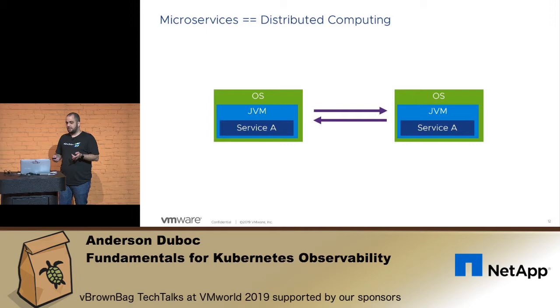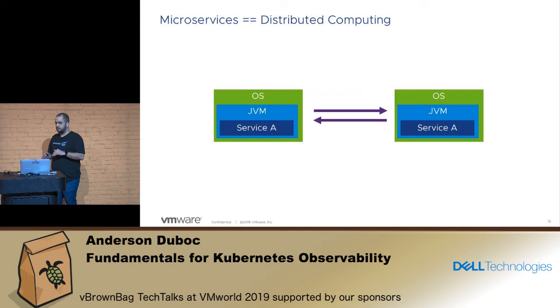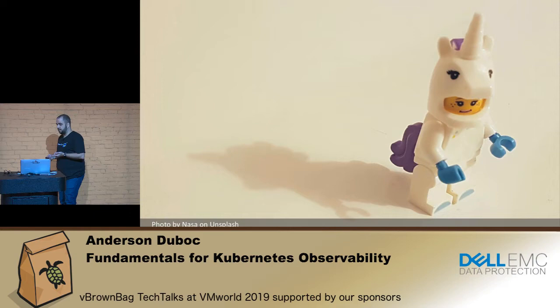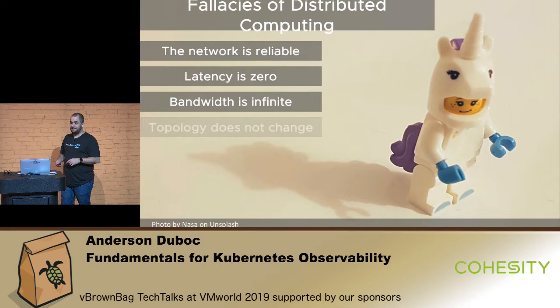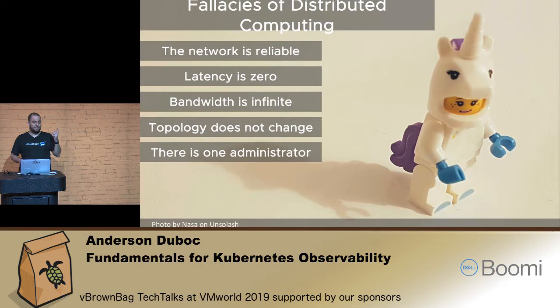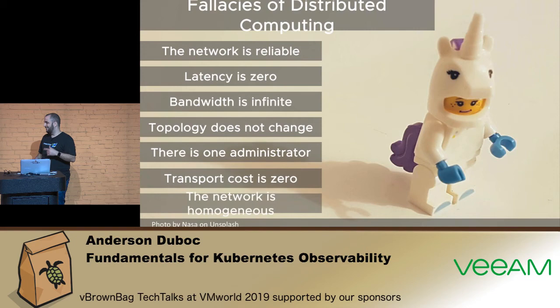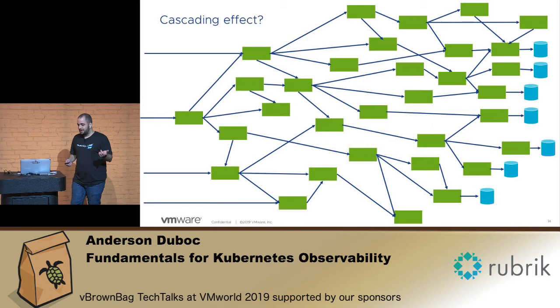Microservices is distributed computing. I have a service that talks to another service on the network. And there are some fallacies of distributed computing: the network is reliable — yeah, always reliable. Latency is zero. Bandwidth is infinite. Topology does not ever change. There is one administrator for everything. Transport cost is zero and the network is homogeneous. So when I have something like this and I have a failure, I have more stuff failing — so I need to monitor.